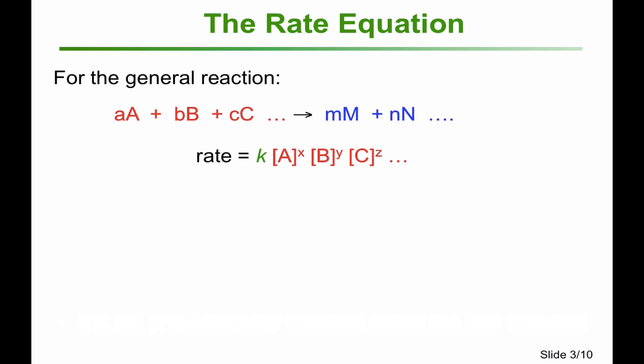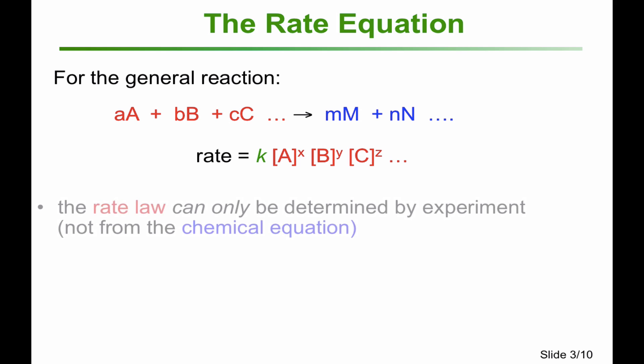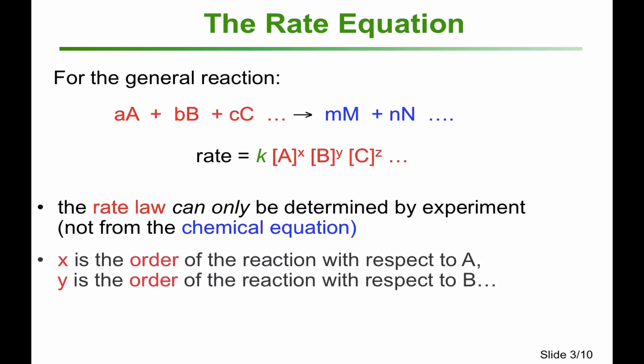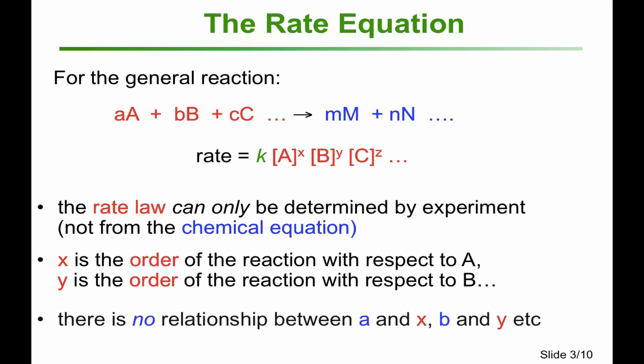This is what we're going to do in this video. The rate law can only be determined by experiment — we can't just look at the chemical equation to get X, Y, and Z. X is the order of the reaction with respect to A, Y is the order with respect to B, and Z is the order with respect to C. There is no relationship between the coefficients in the chemical equation and the values of X, Y, or Z; we have to use experiment to work them out.